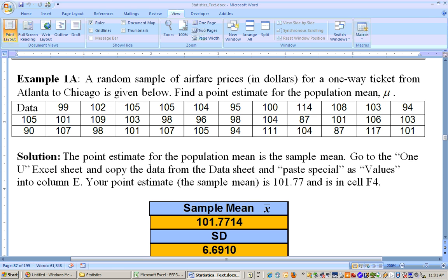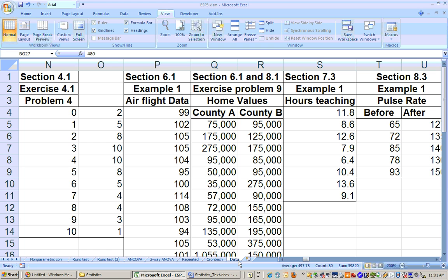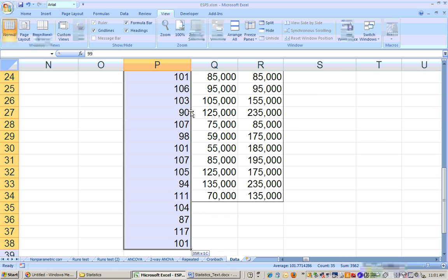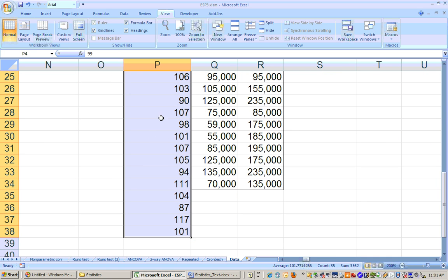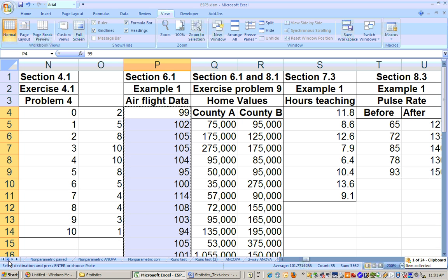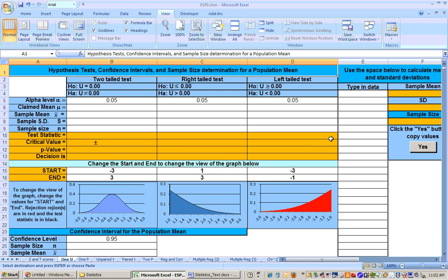Instead of having to type these in, what we can do is go to our Excel sheet, and the last sheet is called data. If you scroll along that sheet, you'll see Section 6.1, air flight data. You can click on that and highlight those cells that have the air flight data on it. Then right mouse click and copy those.